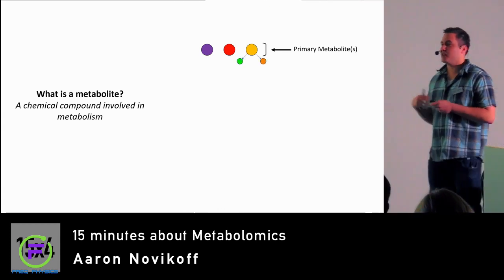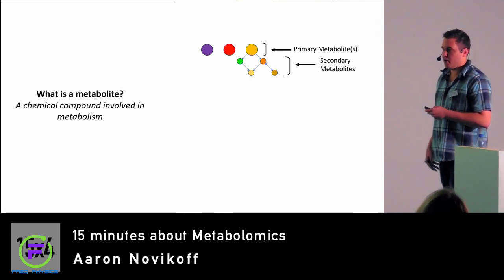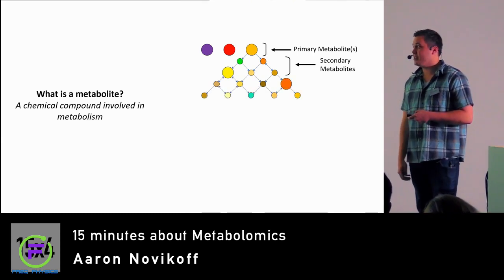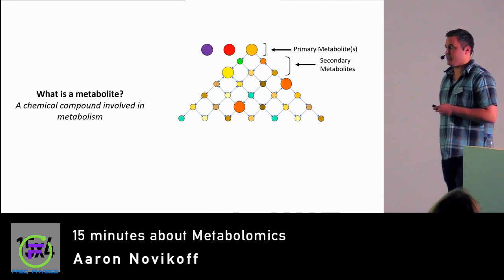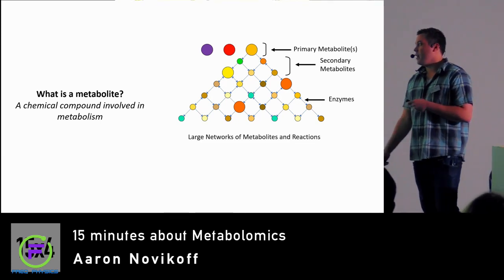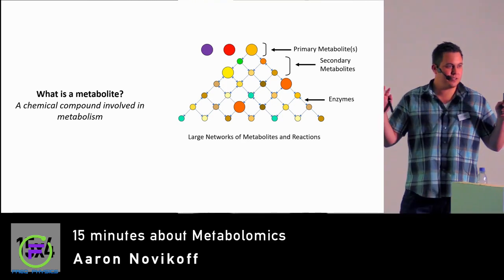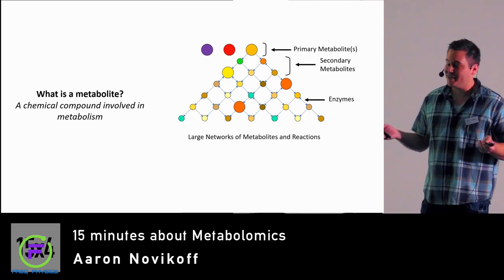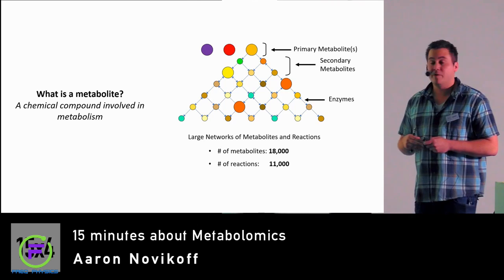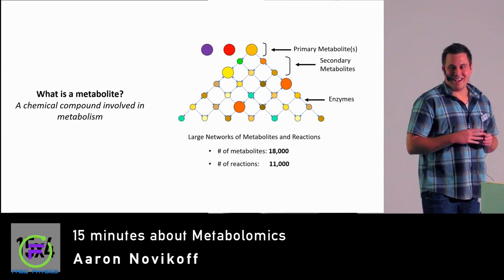Within metabolism, a common theme is interconversion and conversion to smaller, lesser-known metabolites — we call these secondary metabolites. These are useful for completing metabolic processes for specific pathways. As these conversions continue, we can form other primary and secondary metabolites through the action of enzymes, which are protein components in the cell. The number of metabolites that exist within the human cell is about 18,000, and the number of reactions possible is 11,000. So metabolomics tries to explain this — and it's no easy task.